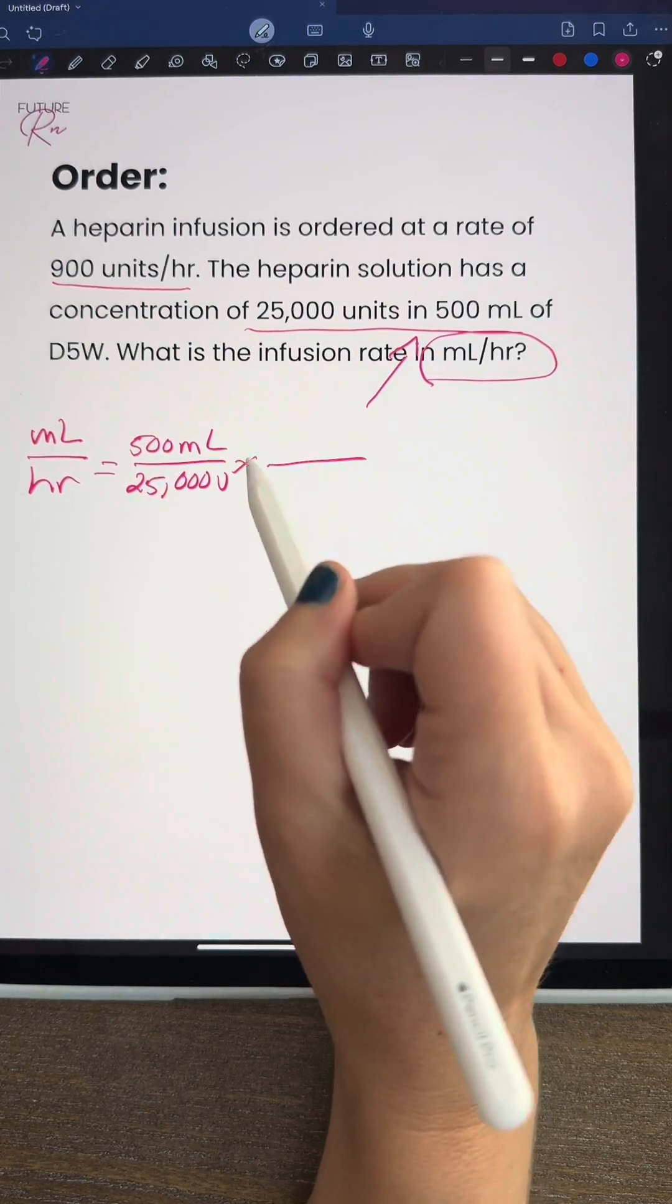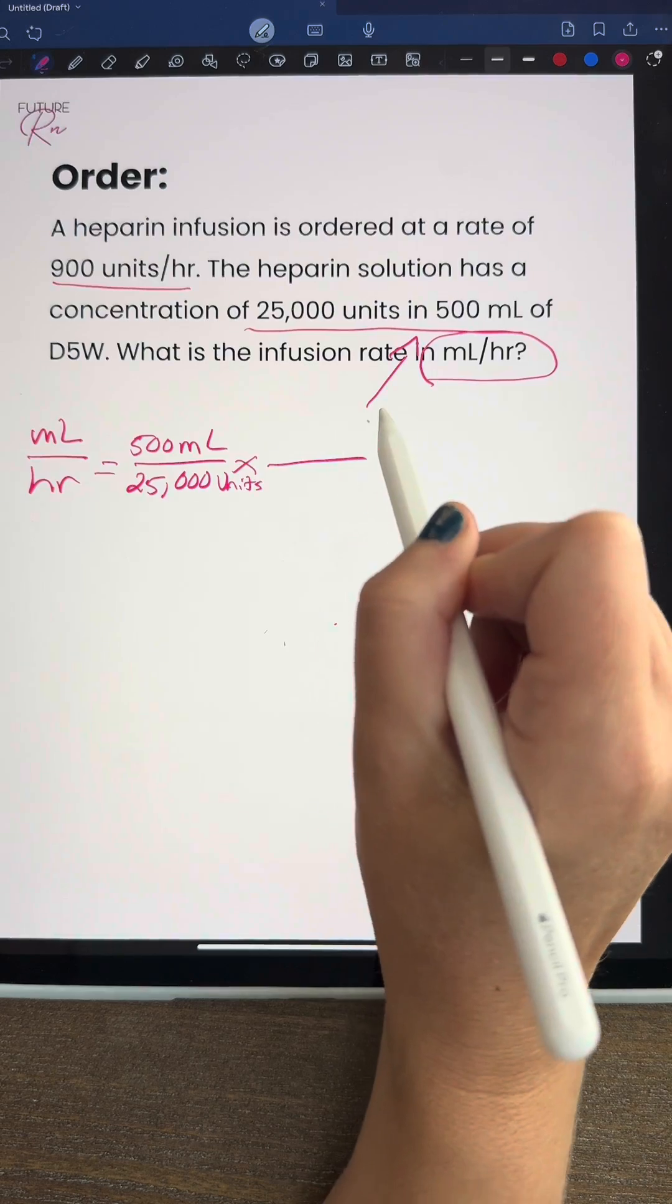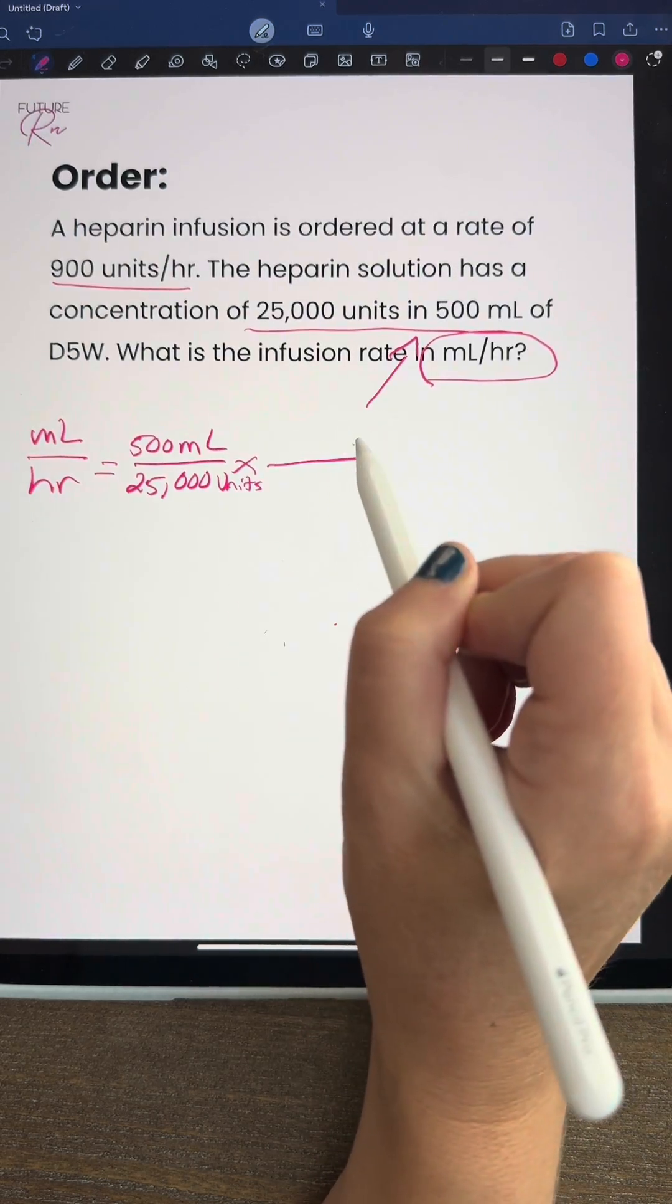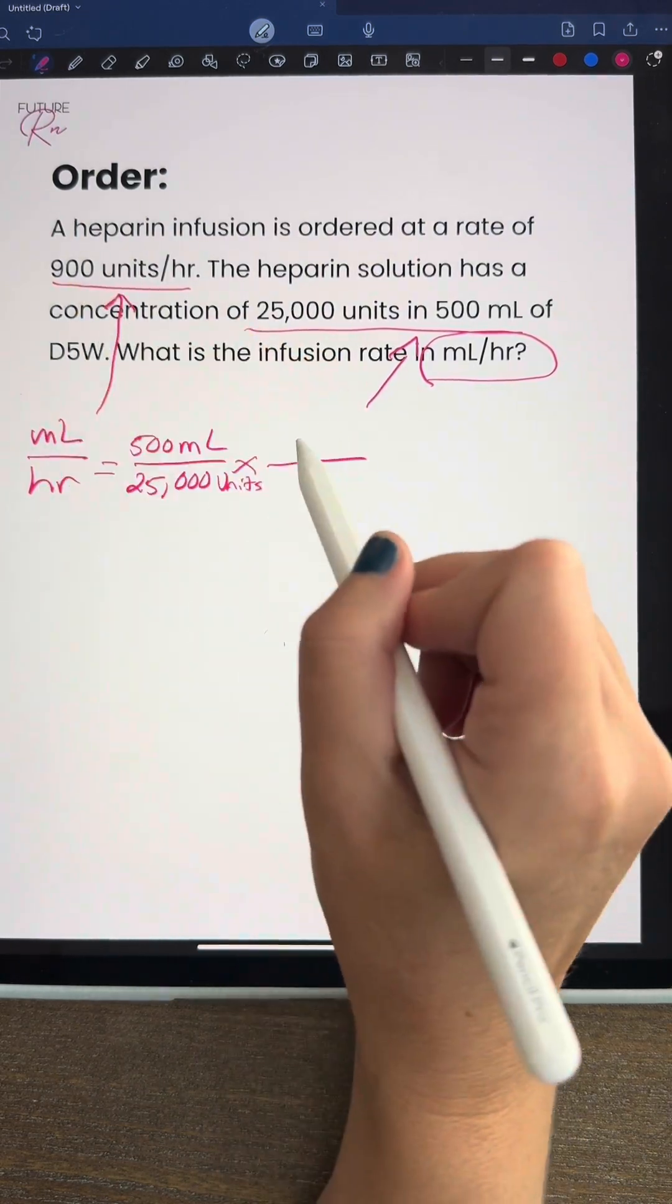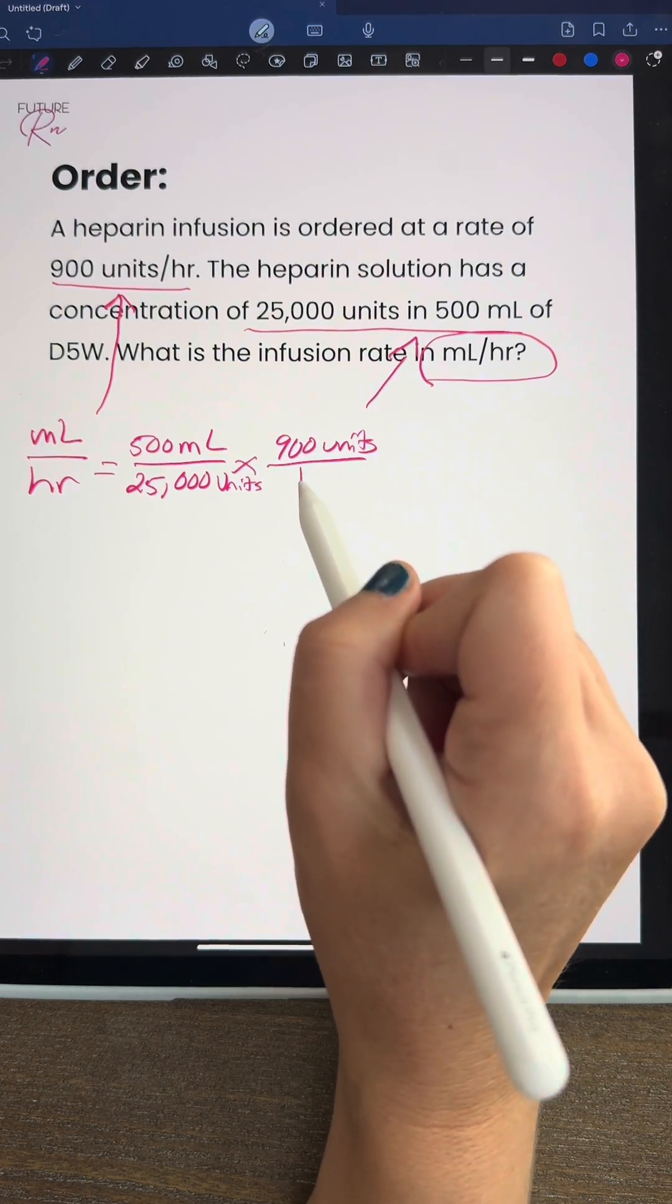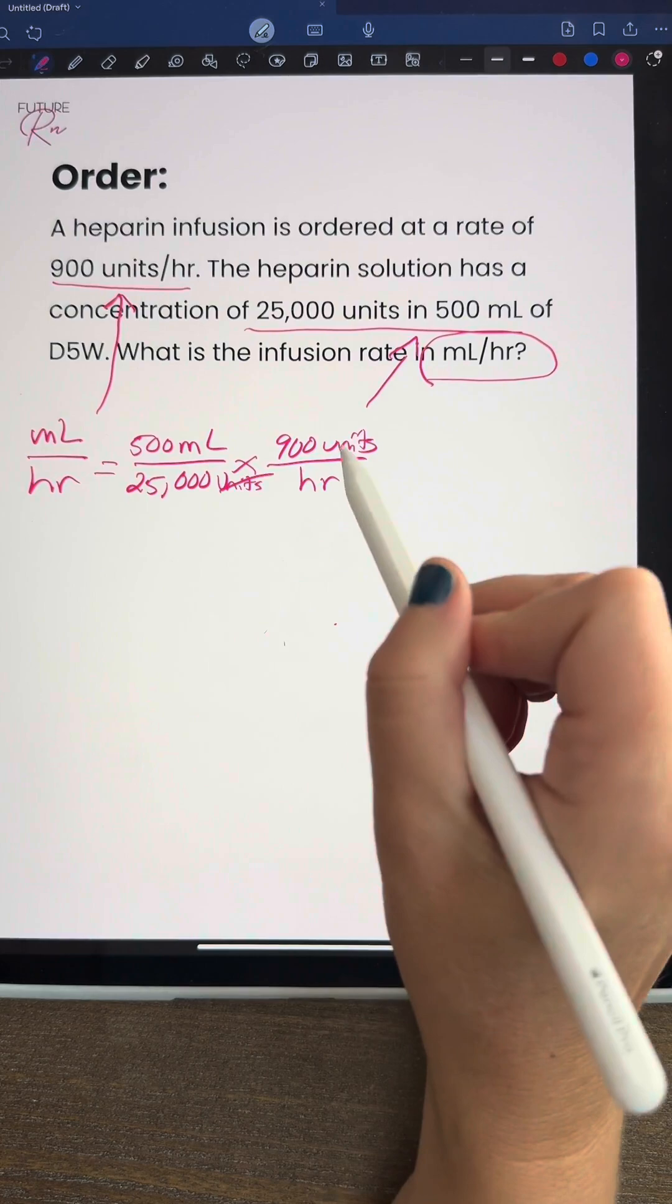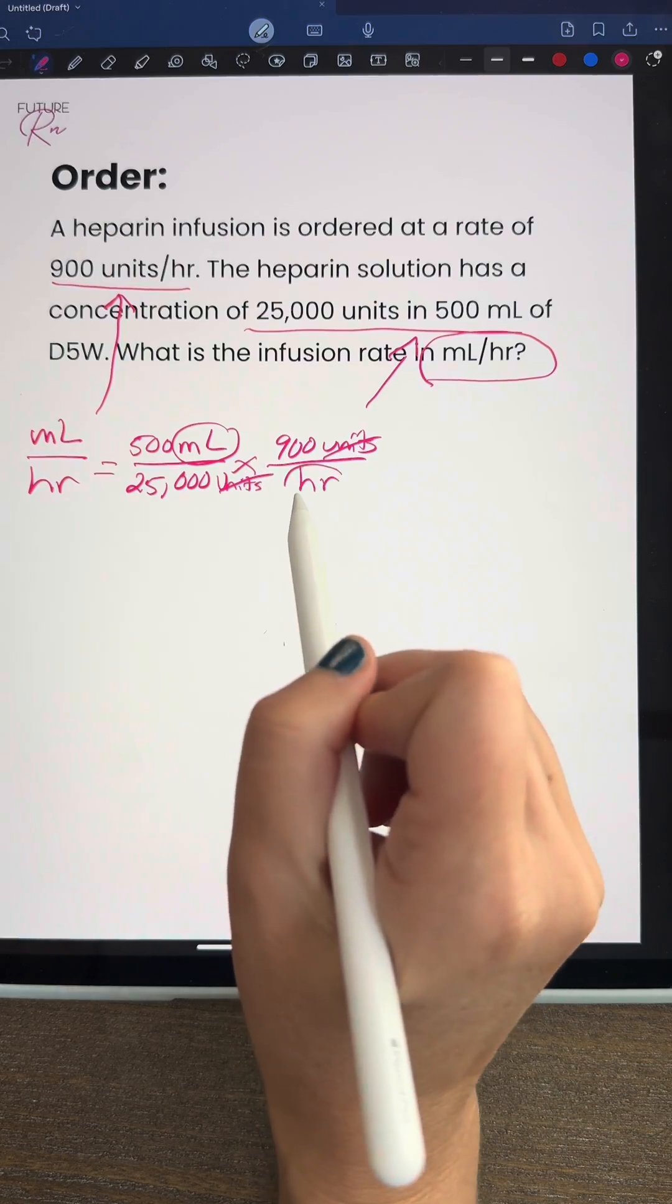Our numerator over here, we want that to also be units so we can cancel those out diagonally, because we want milliliters per hour, not units. Going back to the problem, we have our ordered 900 units per hour. These units are going to cross off, and we can see we have our milliliters per hour.